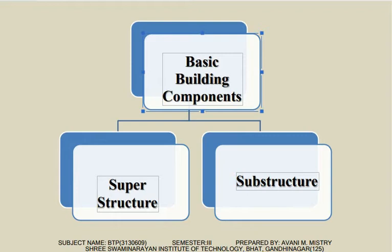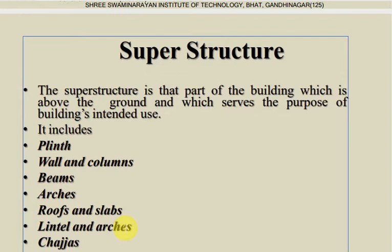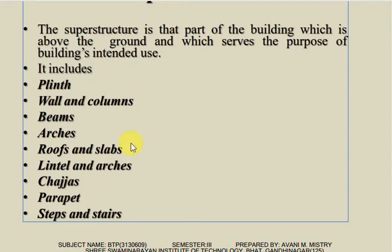Today we start with basic building components: superstructure and substructure. The superstructure is that part of the building which is above the ground and which serves the purpose of the building's intended use. It includes plinth, wall, columns, beams, arches, roofs, slabs, lintels, chajahs, parapets, steps, stairs, etc.